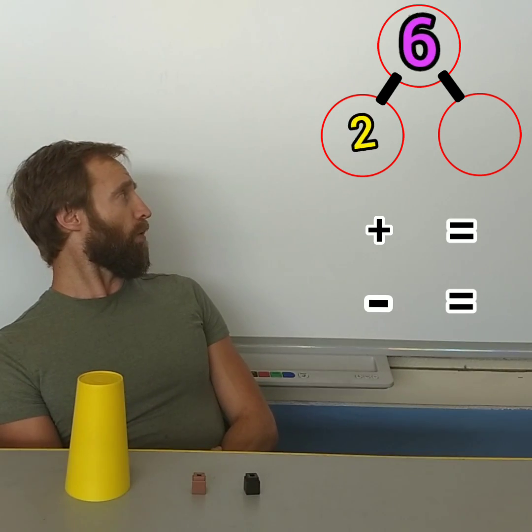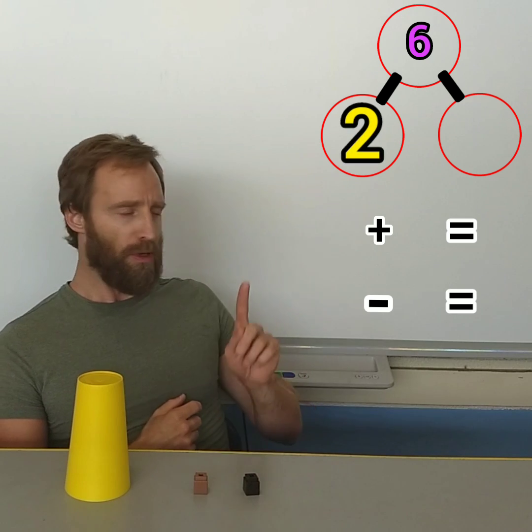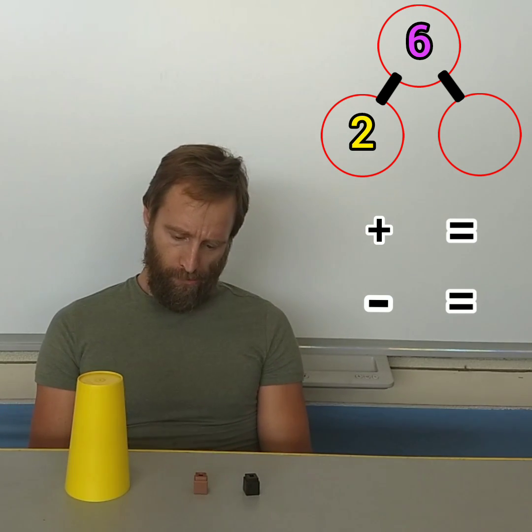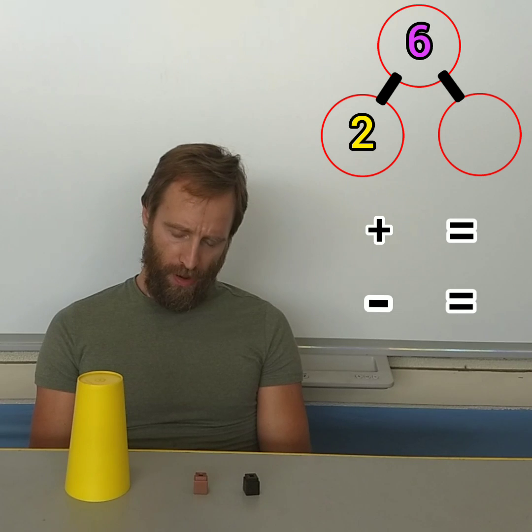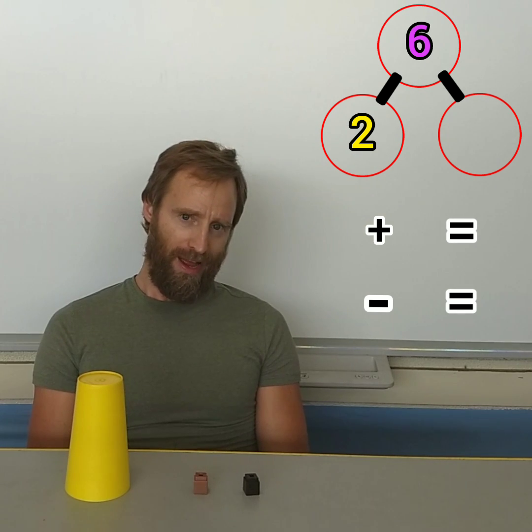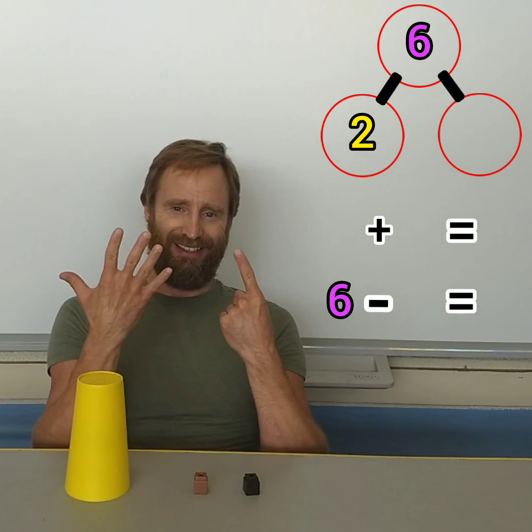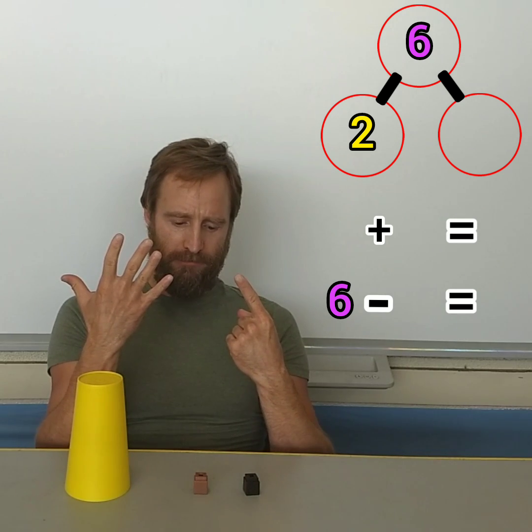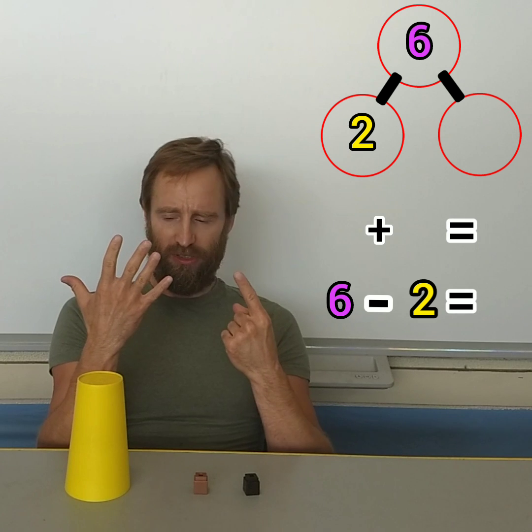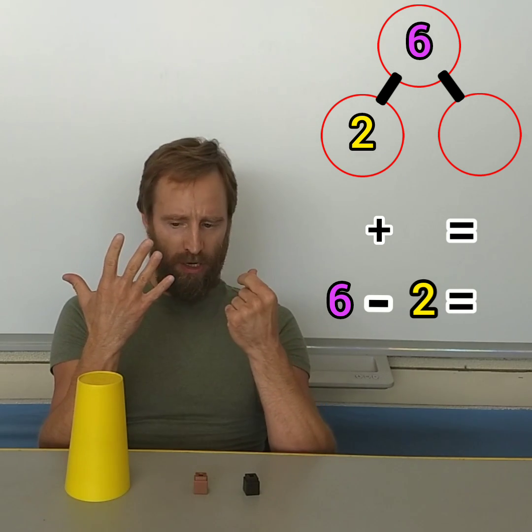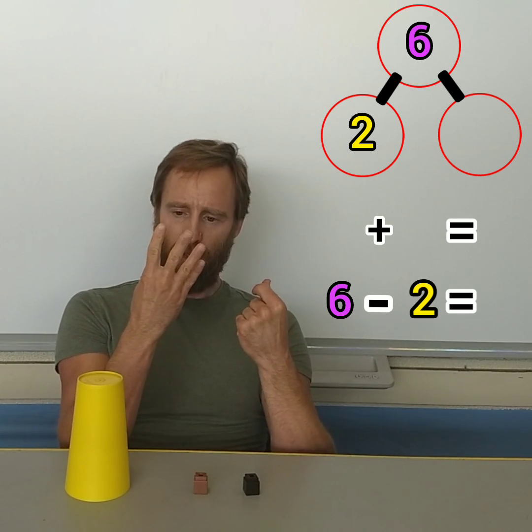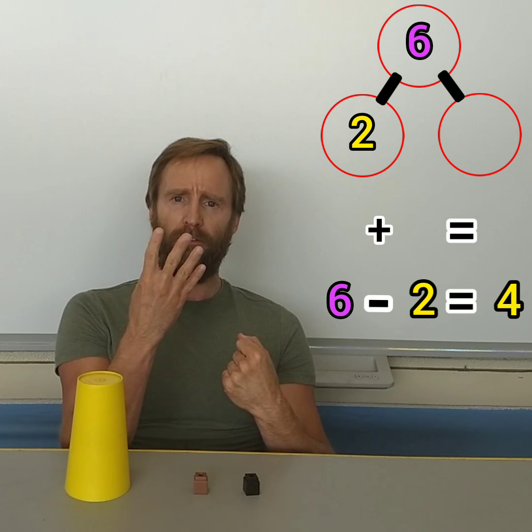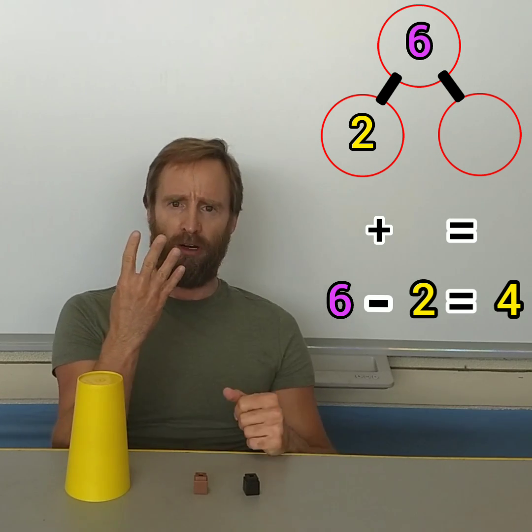Six is the whole. And two, one, two is part. What part is missing? I'm gonna use subtraction to figure that out first. I had six. But now I only have two. Let's take away these two to see how many are under the cup. One, two. Now I have one, two, three, four fingers up. There must be four under the cup.